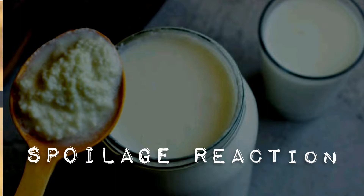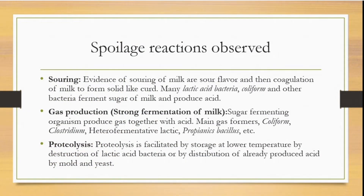Now we'll be discussing the types of spoilage reactions that occur in milk. Souring — evidence of souring includes sour flavors and coagulation of milk to form solids like curd. Many lactic acid bacteria, coliform, and other bacteria ferment the sugars of milk and produce acid. Gas production — sugar-fermenting organisms produce gas together with acid. Main gas formers include coliform, Clostridium, heterofermentative lactic, propionic, and Bacillus species.